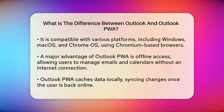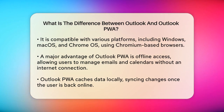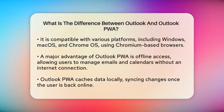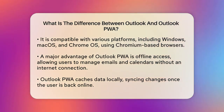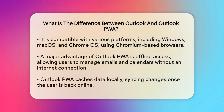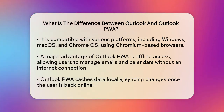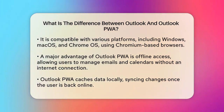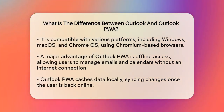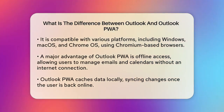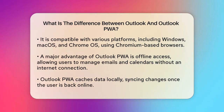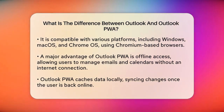One of the key differences is offline access. With Outlook PWA, you can work on your emails and calendar even when you're not connected to the internet. It caches your data locally, so you can compose, read, and delete emails, and these changes will sync once you're back online.